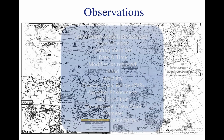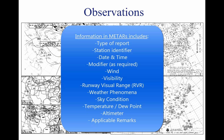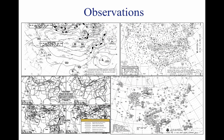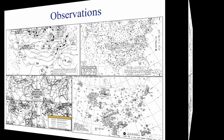This information includes the type of report, station identifier, date and time, modifier as required, wind, visibility, runway visual range (RVR), weather phenomena, sky condition, temperature/dew point, altimeter reading, and applicable remarks. Although the reports cover only a small radius, the pilot can generate a good picture of the weather over a wide area when many reporting stations are looked at together.